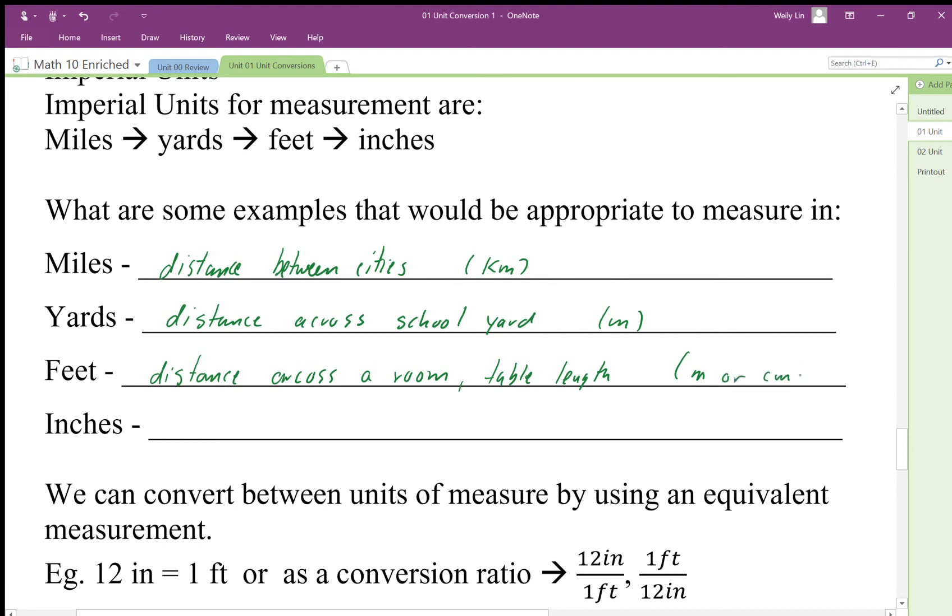If we're talking about distance across the room that would be meters, whereas table length we might want to measure in centimeters. Inches—things like a sheet of paper we would measure in inches.